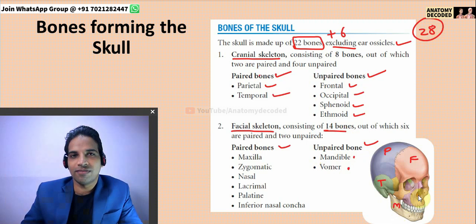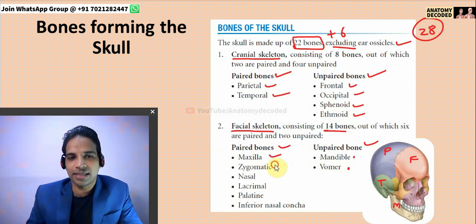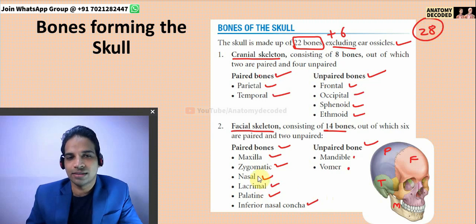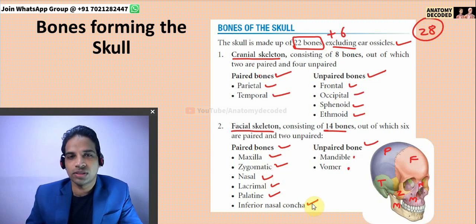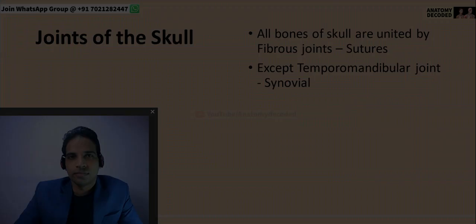Vomer is the midline bone seen in the nasal cavity as a thin bone in the midline. The paired bones in the facial skeleton are: maxilla, zygomatic, nasal bone, lacrimal bone, palatine bone, and inferior nasal concha. This is the maxilla, this is the zygomatic bone, here is the nasal bone, lacrimal and palatine bones are here, and the inferior nasal concha is a separate bone in the lateral wall of the nose.